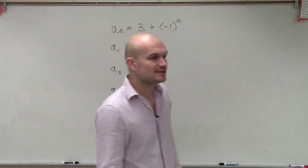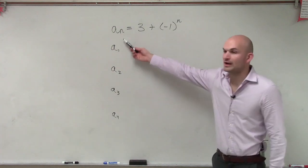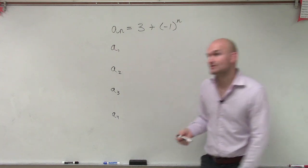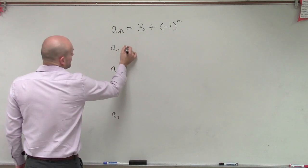So what we simply need to do is rather than evaluating for a_n, which is our rule, we now want to figure out what the value is at a_1. So we're going to put 1 in for our n.